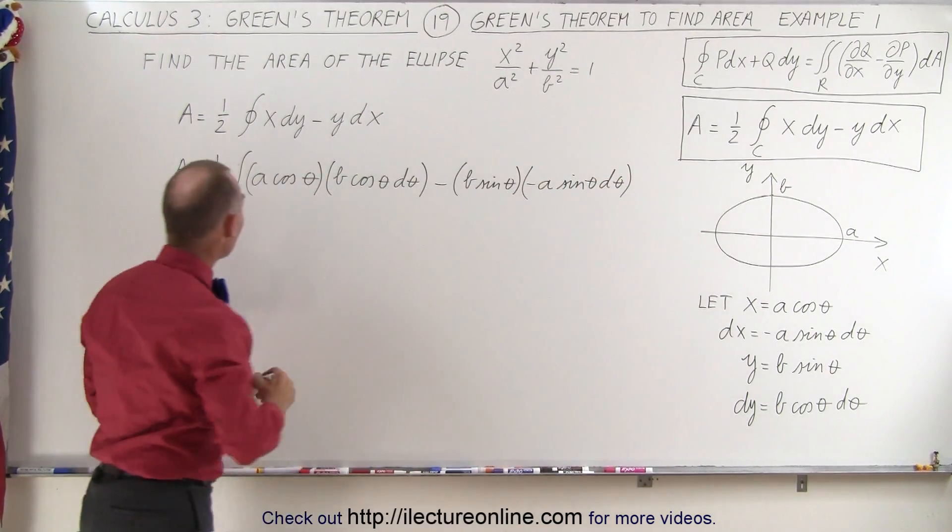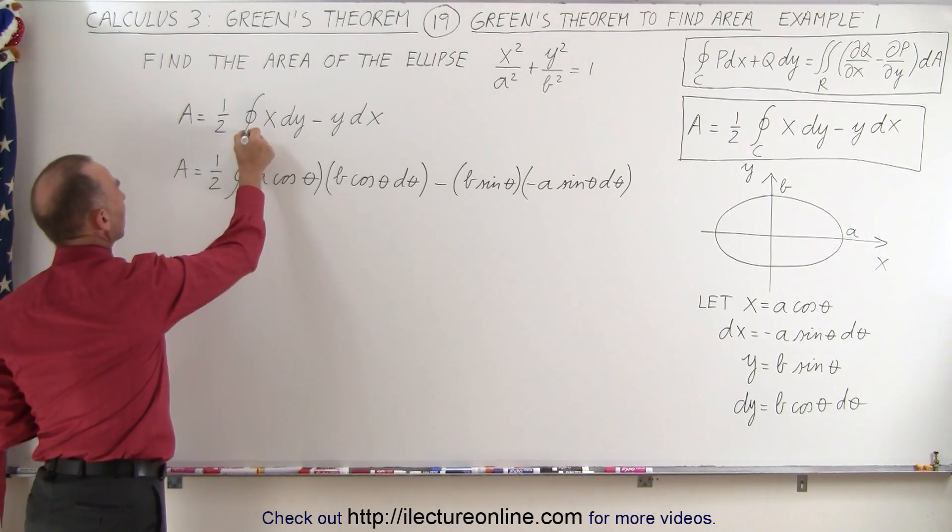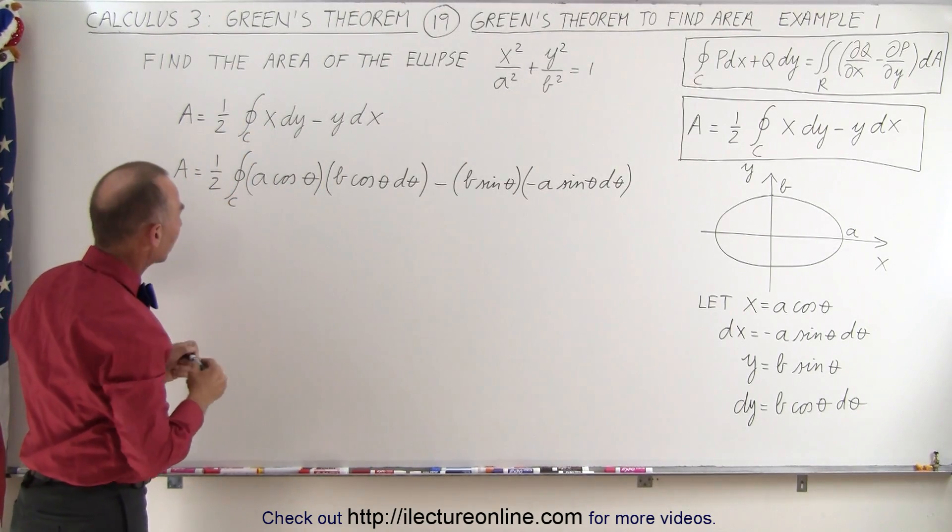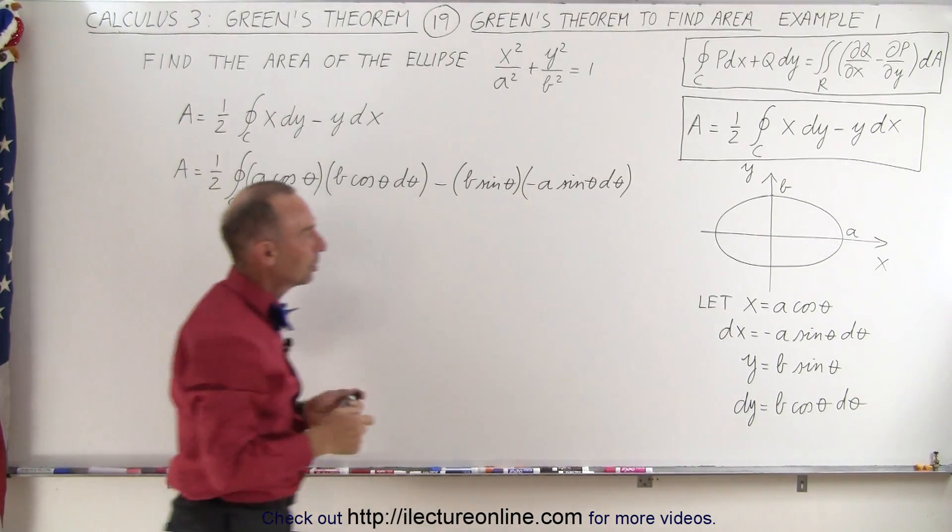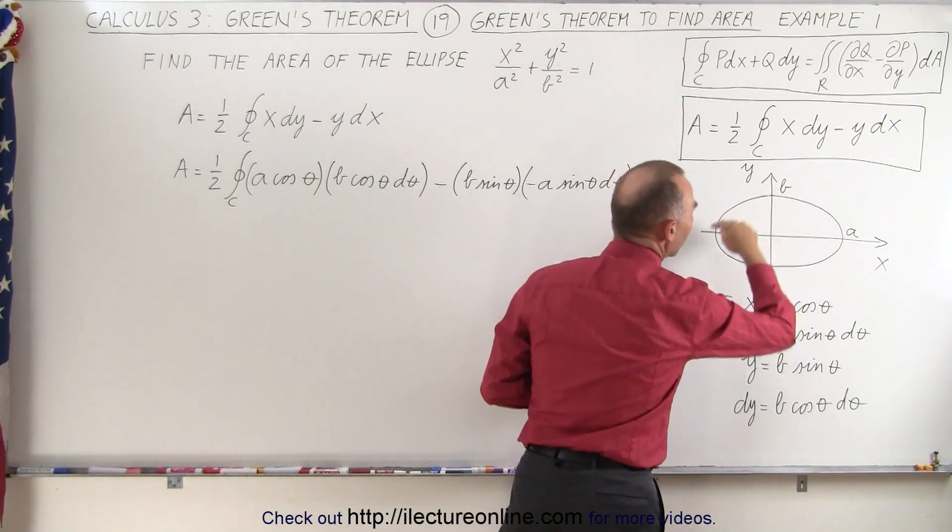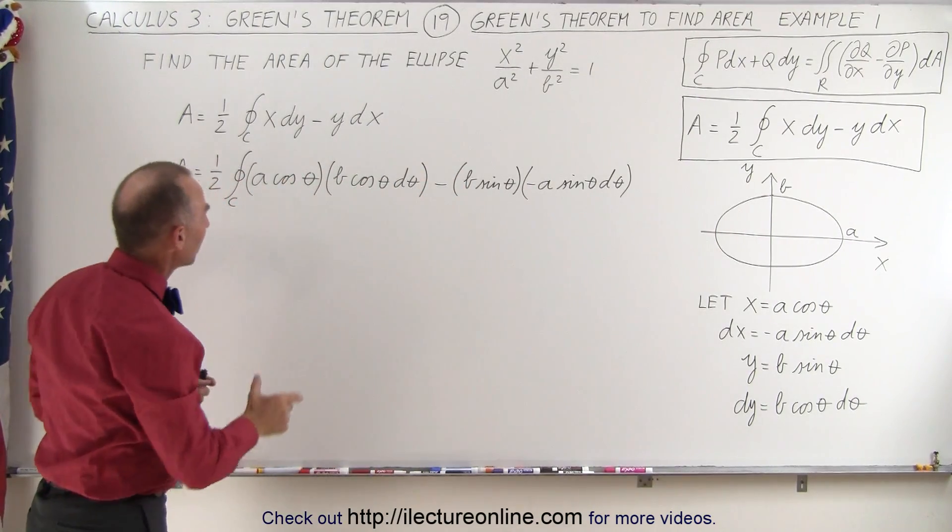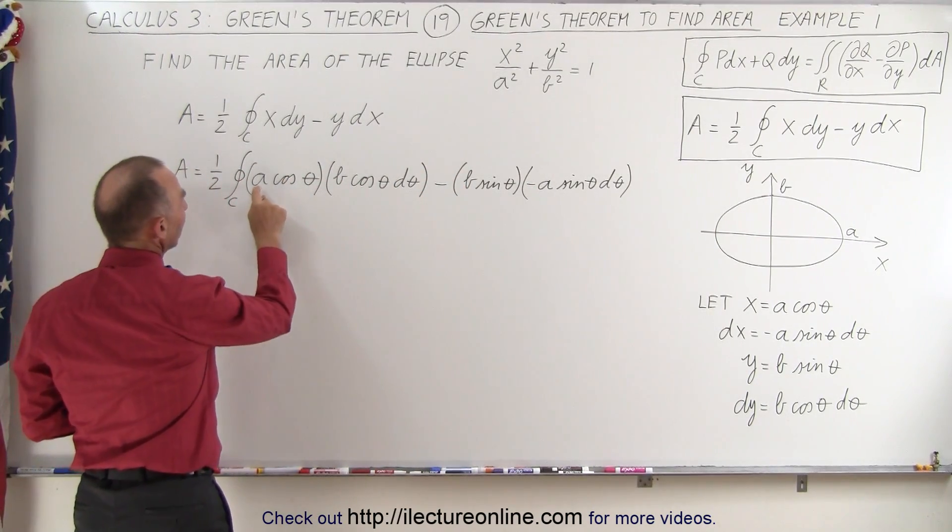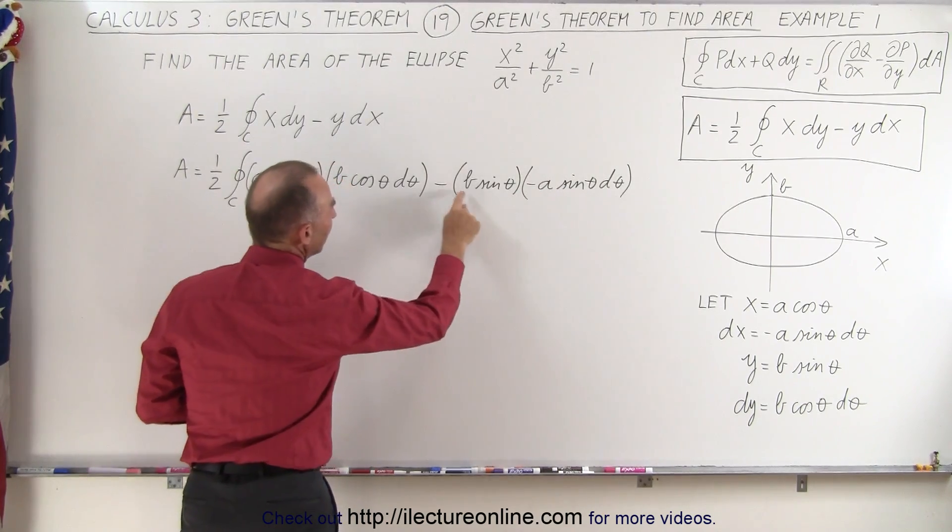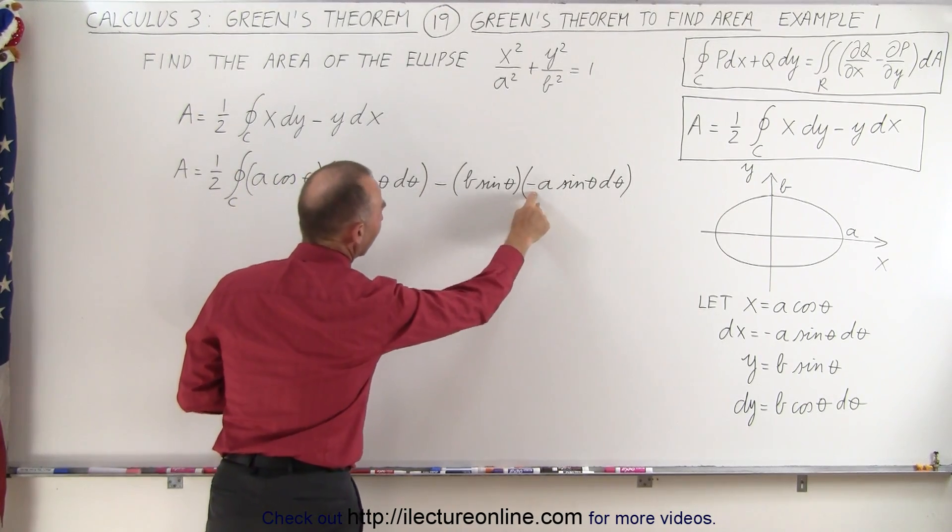Okay, now you can see this is going to be an integral over the entire path along the ellipse, and we're going to go in a counterclockwise direction, a positive orientation. But notice here that we can factor out an a times b, they're both constants. This negative will cancel out that negative.